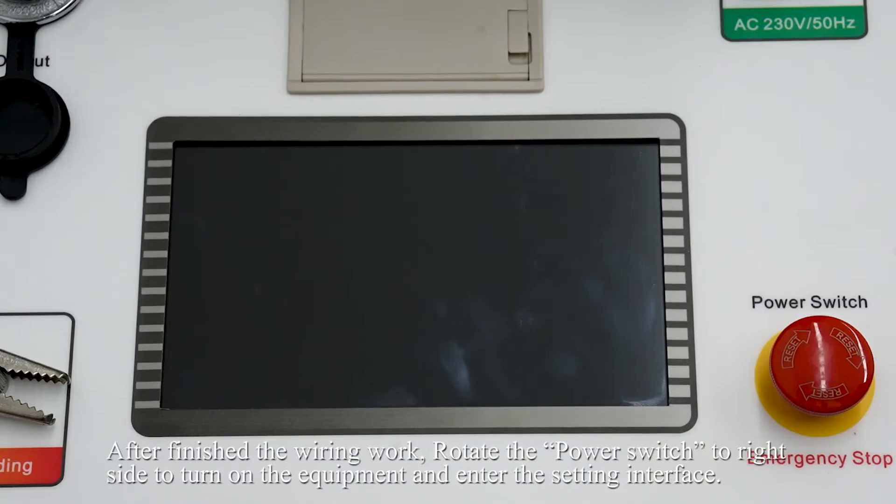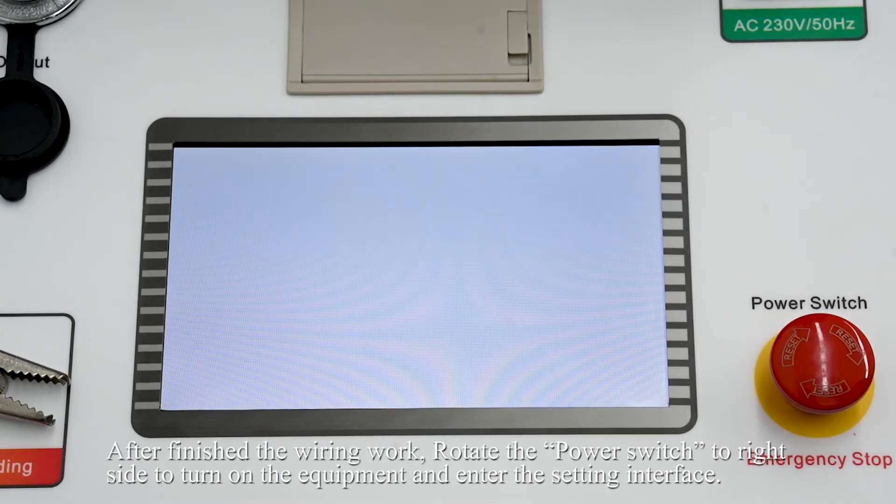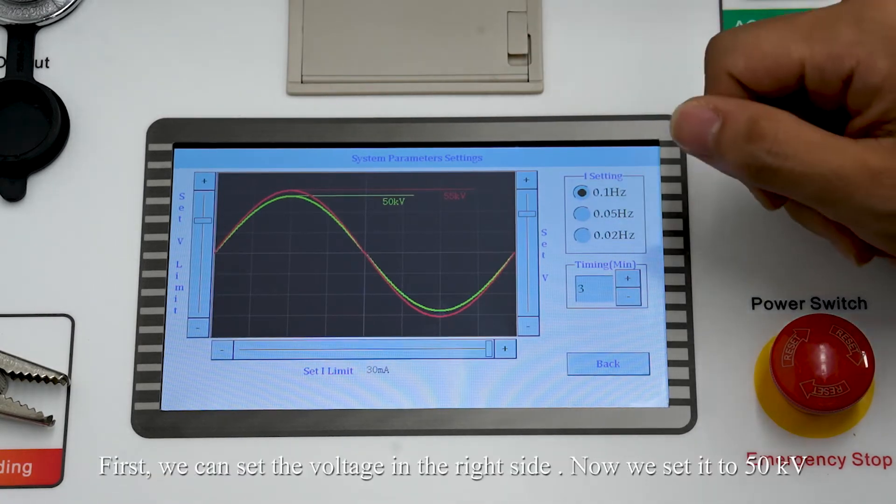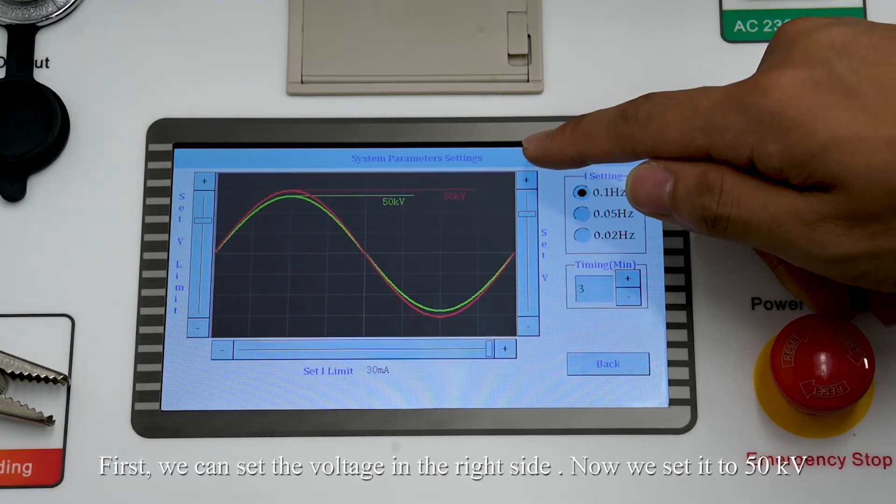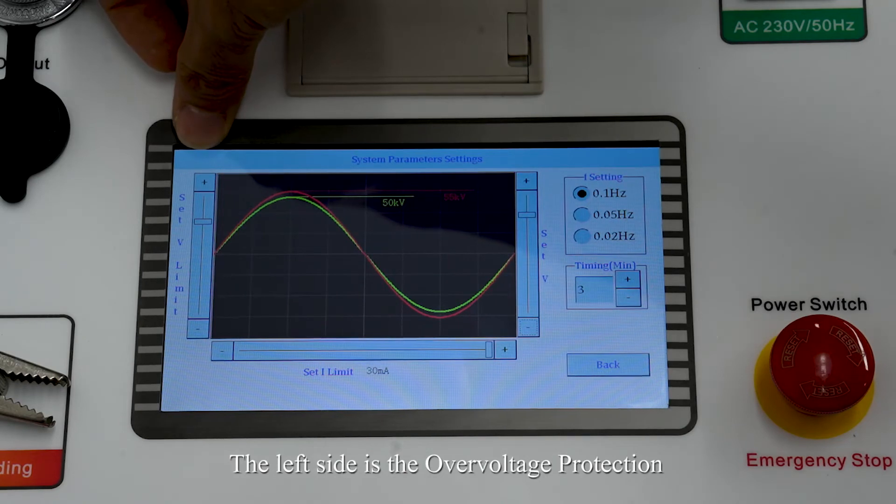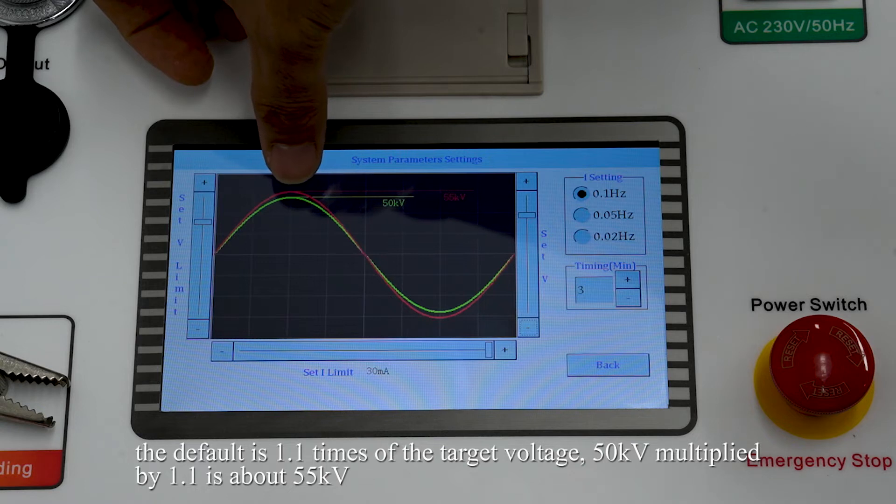After finishing the wiring work, rotate the power switch to right side to turn on the equipment and enter the setting interface. First, we can see the voltage on the right side. Now we set it to 50 kV. The left side is the over-voltage protection. The default is 1.1 times of the target voltage. 50 kV multiplied by 1.1 is about 55 kV.